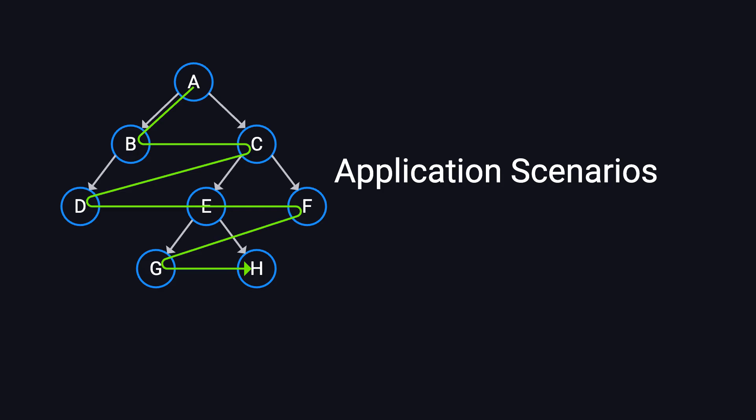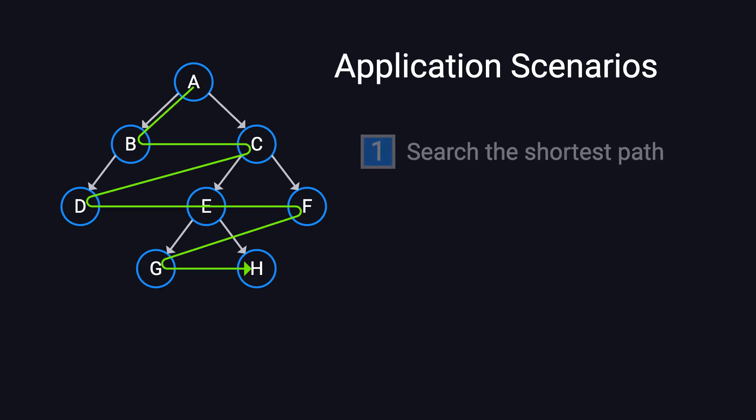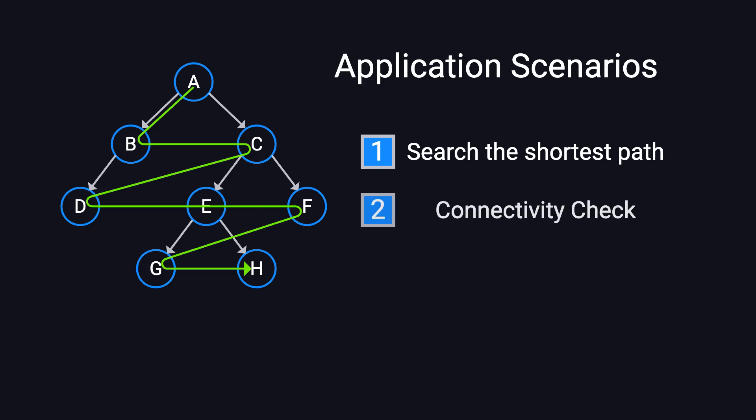BFS is widely used in various applications. In shortest path problems, BFS guarantees the shortest path in an unweighted graph, making it useful for maze solving, network routing, and social network friend recommendations. It is also used for connectivity checks, such as determining whether a graph is connected or counting the number of connected components. In artificial intelligence and search problems, BFS is commonly applied in state-space search, including solving the eight-puzzle problem and planning robot navigation paths.